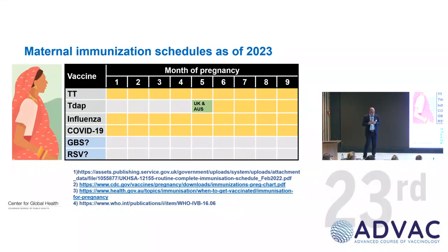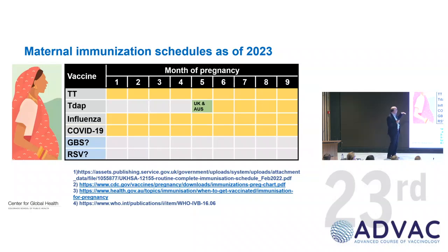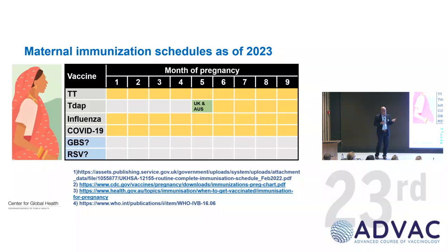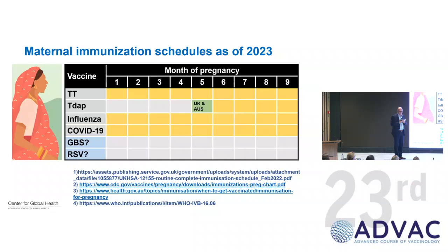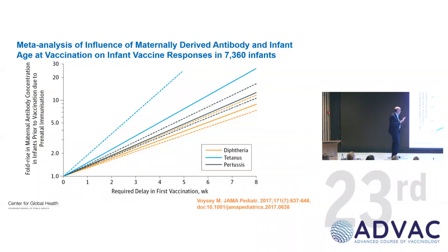Regarding maternal immunization, the schedules change a bit. TT and TDaP we have more or less agreed on. Influenza and COVID can be given any time during pregnancy, but there will be questions when GBS vaccine and RSV vaccine come along — how we crowd those vaccines into pregnant women safely and with correct timing. We know that maternal immunization will start to influence the way we look at the infant schedule, because the more antibody the child gets from the mother, the more you need to delay doses of vaccines in order to achieve the same immunogenesis.